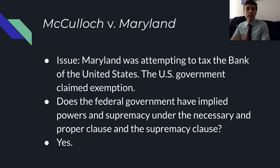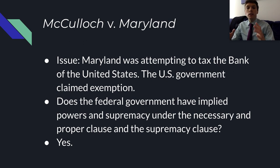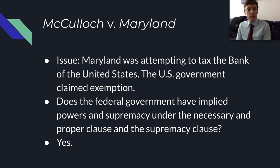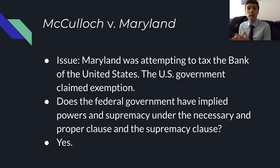John Marshall, as a delegate at the Virginia Ratifying Convention in 1788, famously asked whether the government of the United States has the power to make laws on every subject. He asserted — before he was Chief Justice — that the federal judiciary would declare void any law that went against the Constitution, hearkening to judicial review, which is established in Marbury v. Madison. In 1801, John Adams appointed Marshall as Chief Justice. As Jefferson became president, Marshall and Jefferson became rivals over the Federalist versus states' rights debate. In 1819, this debate came to a head in McCulloch v. Maryland.